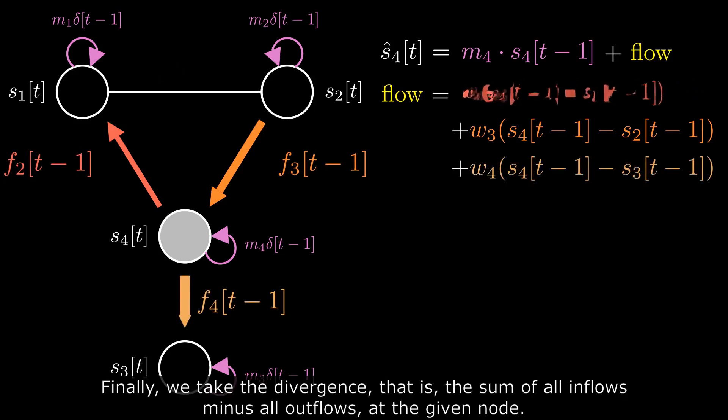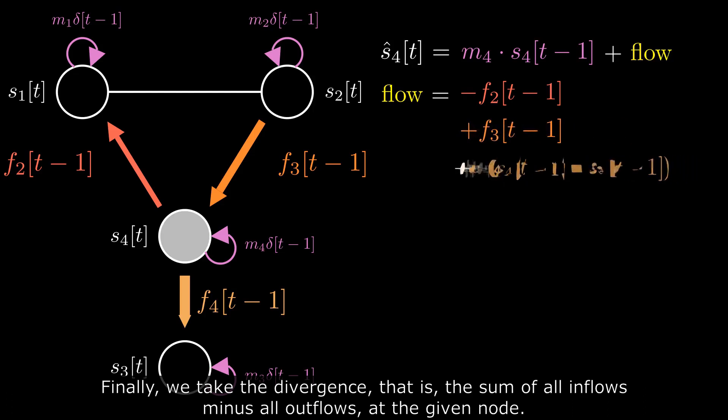Finally, we take the divergence, that is the sum of all the inflow minus all the outflow at the given node.